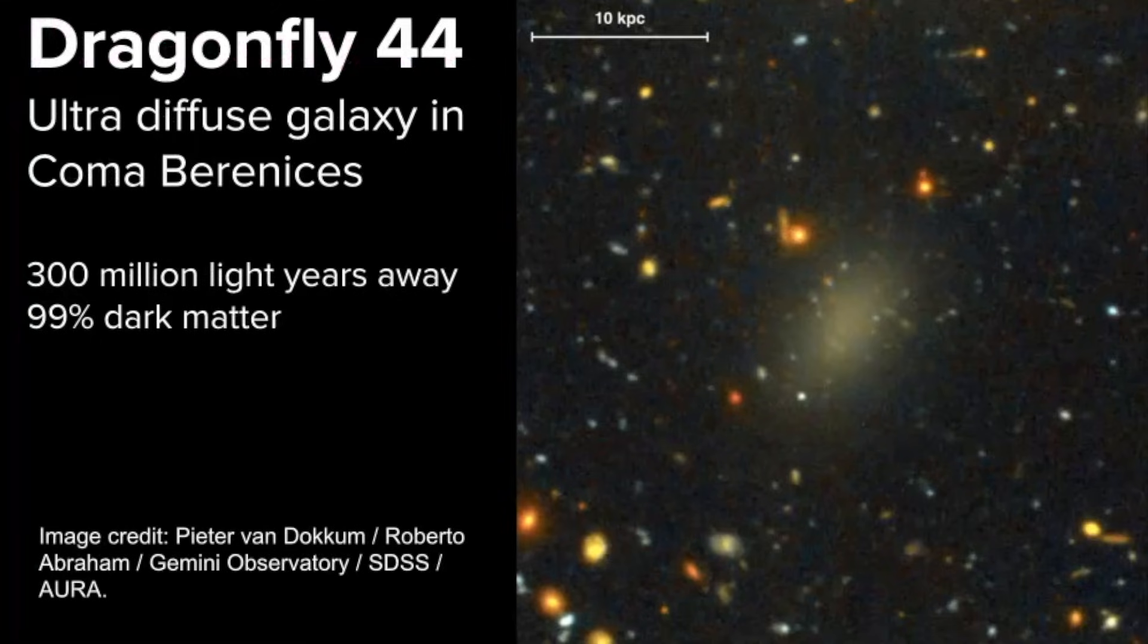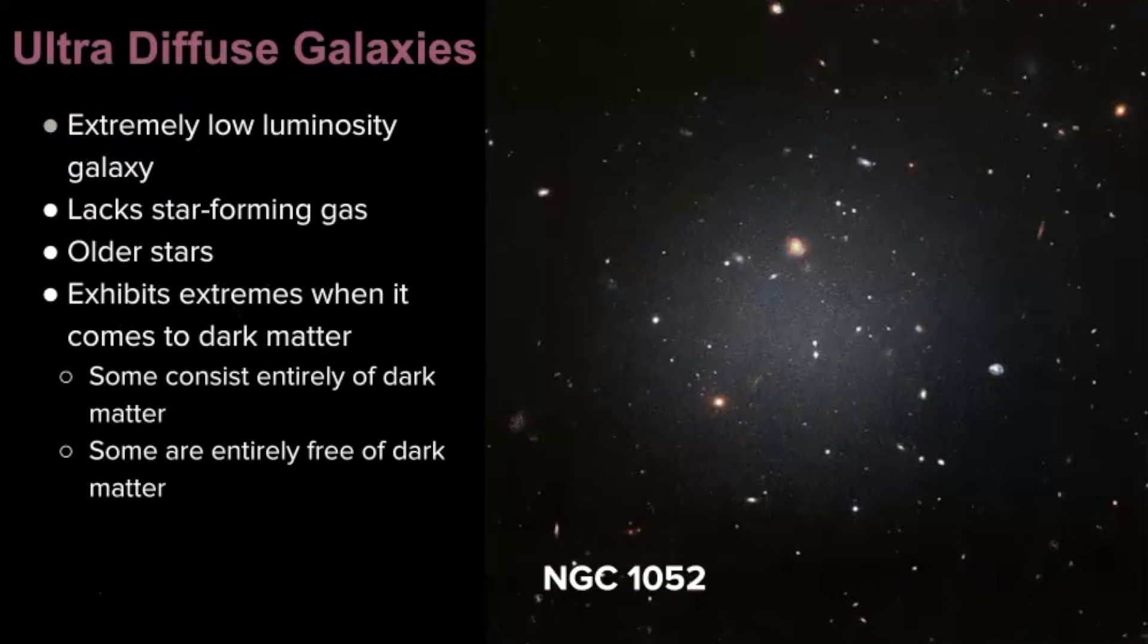Here is Dragonfly 44. This is an ultra diffuse galaxy in the constellation of Coma Berenices. This one is 99% dark matter. So very interesting that there's a wide variety of ultra diffuse galaxies. But the thing that they share is that they just aren't very bright.